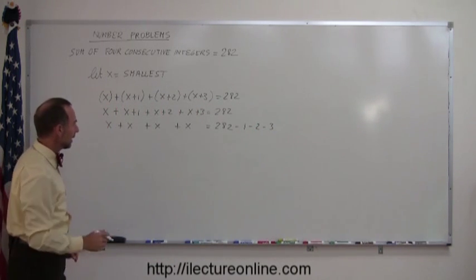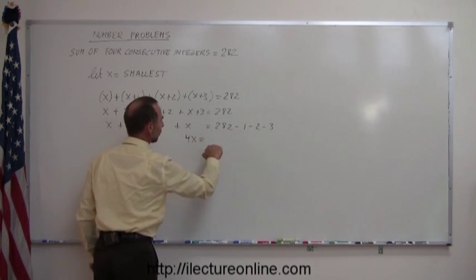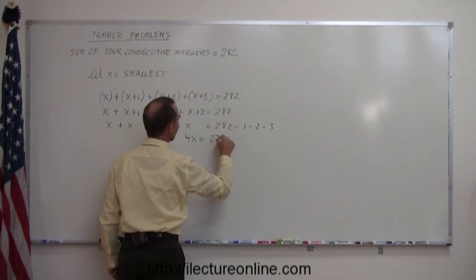Next step is to add all the x's together, so that gives me four x on the left side. I add all the numbers together, 282 minus, that would be minus six, that would be 276.